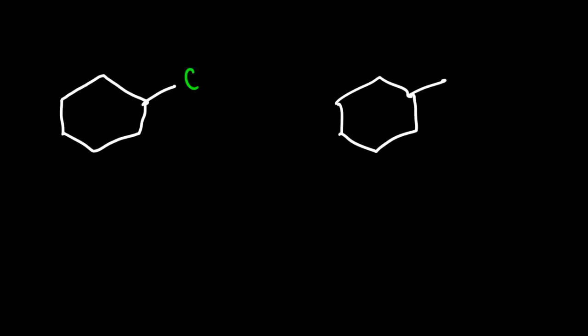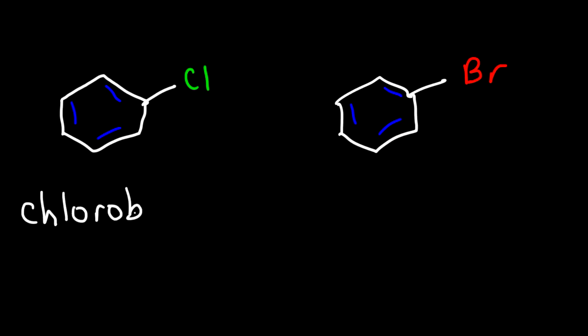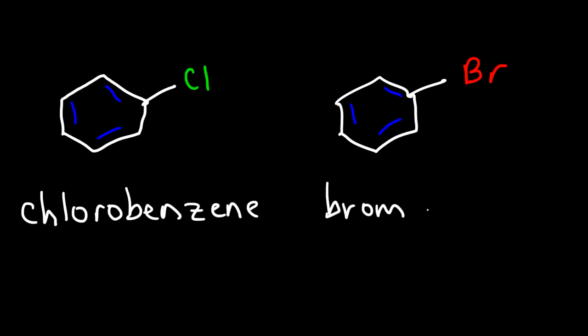What if we have a halogen attached to a benzene ring? If we have a chlorine atom, this is called chlorobenzene. Compared to a bromine atom, that is going to be called bromobenzene.